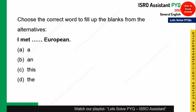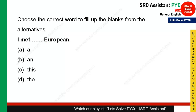The next question is fill in the blank with the correct article. As you know, 'European' is pronounced with a 'y' sound at the start — not a vowel sound — so the article 'a' is used instead of 'an'. The correct sentence is 'I met a European', not 'an European'. So option A is the right answer.